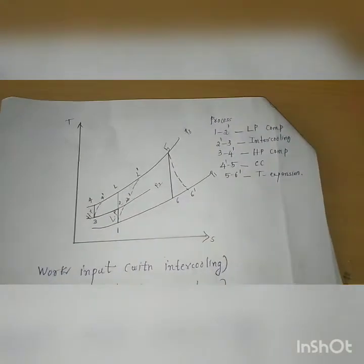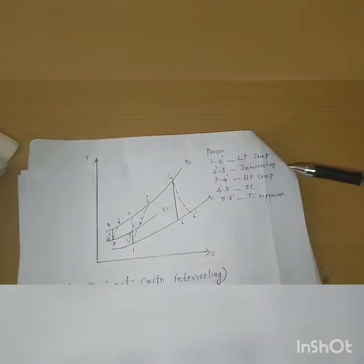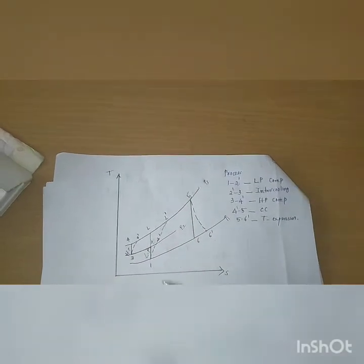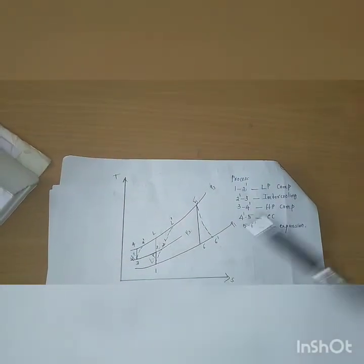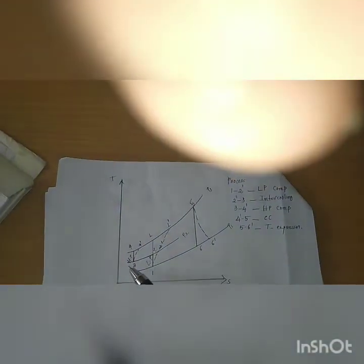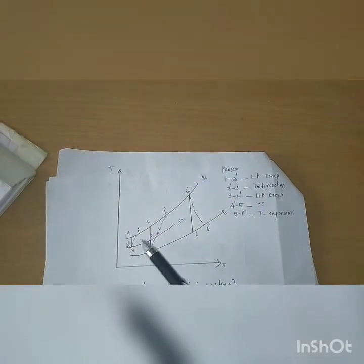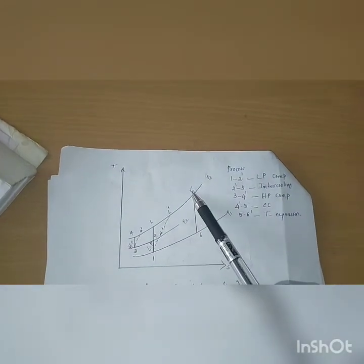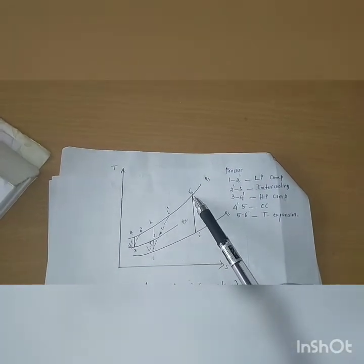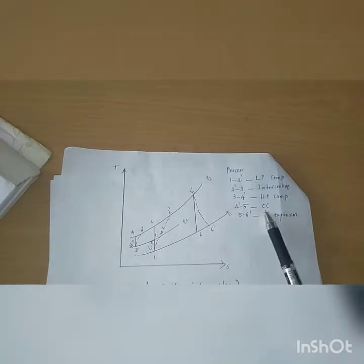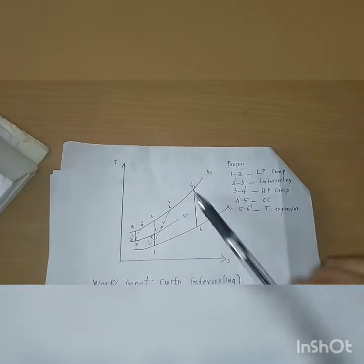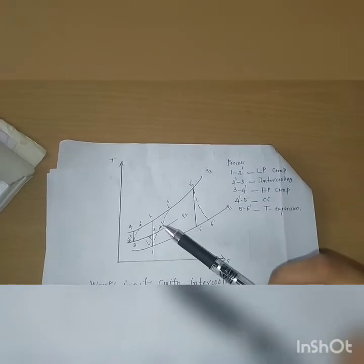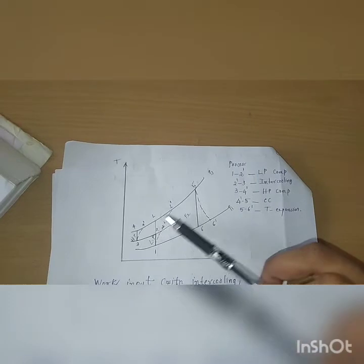This is the actual process denoted as 1 to 2 dash in the low pressure compressor. Then 2 dash to 3 is the intercooling. Then 3 to 4 dash is the high pressure compressor. From 4 dash to 5, combustion takes place — that is, in the combustion chamber. From 5 to 6 dash is turbine expansion. We can denote the reference points as L and L dash for intercooling.